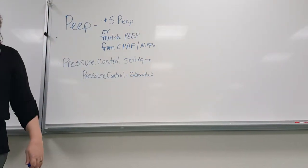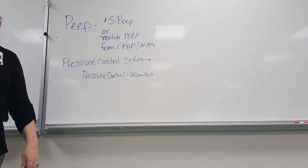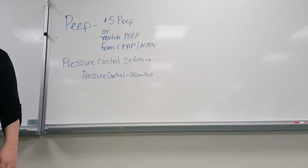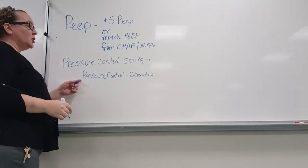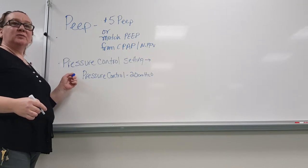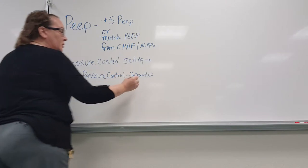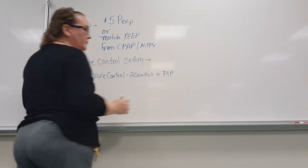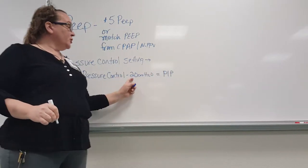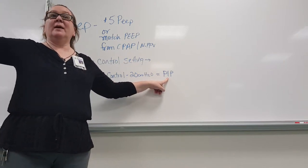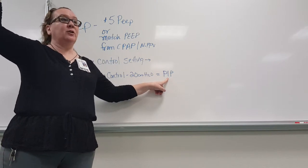For every vent we have here except the Draeger — so the Servo, the PB, and the Galileo — because there always has to be some crazy exception — you have to take the PEEP into account. When you're looking at a pressure control setting, this number should equal whatever your PIP number is. Your pressure control of 20 should be reflected in your PIP; it's set in the settings but it needs to match the PIP, and I'll tell you why that's important.